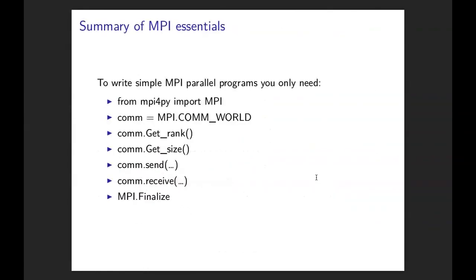The summary at this point: here are all the MPI calls used to write our parallel program. I had to import the MPI module, initialize the communicator, and then use the following communicator methods: getRank, getSize, send, and receive. Finally I called finalize at the end to shut down MPI. With just these few MPI methods, you can write a viable simple parallel program. Send and receive are very general — you can send or receive anything — so that's fundamentally all you need.